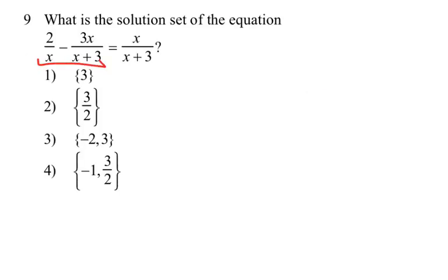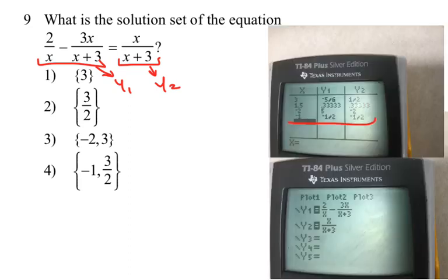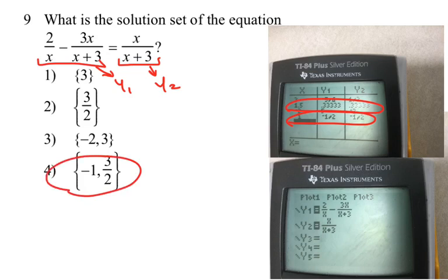Number nine: what is the solution set of this equation? I let the left side be y₁ and the right side be y₂ and put them into the graphing calculator. Plugging in each value on the table, I found that x equal to 1 gives the same answer for both sides, x equal to negative 1 also gives the same answer, and so does x equal to 1.5. Therefore, choice 4 was the answer.